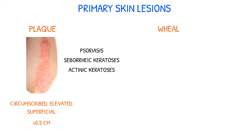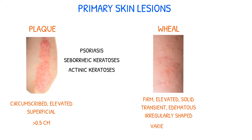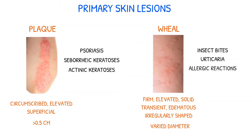A wheal is a firm, elevated, solid, transient, edematous, irregularly shaped area that can vary in diameter. Some examples of wheals include insect bites, urticaria, and allergic reactions.